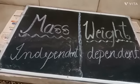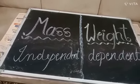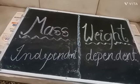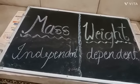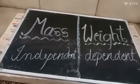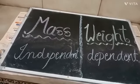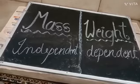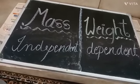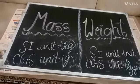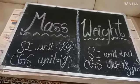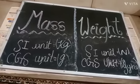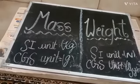The mass of a body is independent of the location where it is measured, while the weight of a body is dependent on the location where it is measured. So mass remains the same everywhere, but weight varies with location.